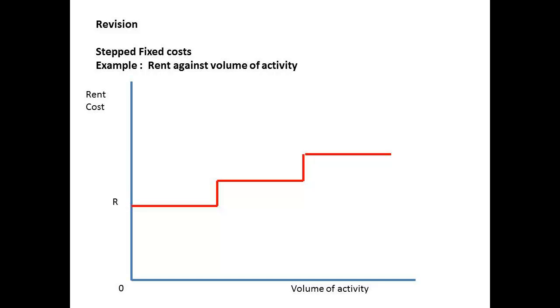As an aside here, there could be a case where there were stepped fixed costs. If premises are rented, and rent is a fixed cost, then consider what happens when the capacity of the building is reached. More space needs to be rented, and this will increase the fixed cost. The fixed cost will remain the same until this capacity is reached, at which point further space must be rented. This gives rise to stepped fixed costs.